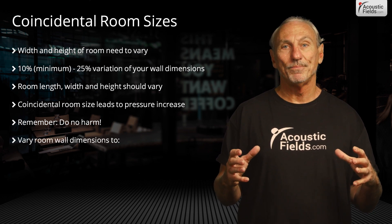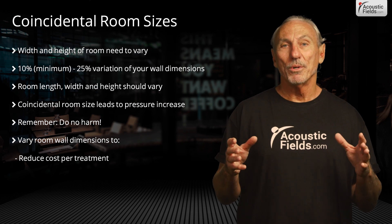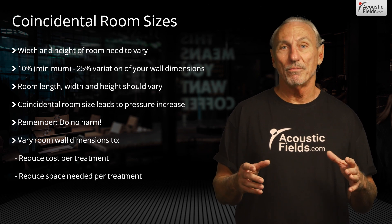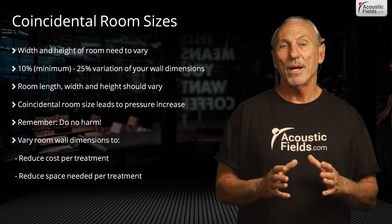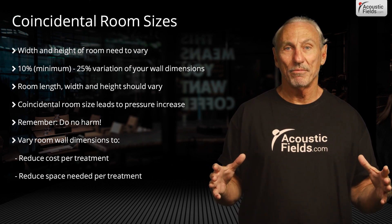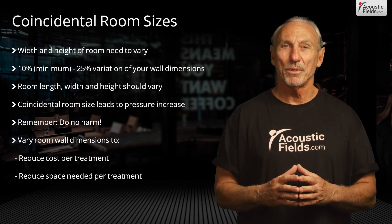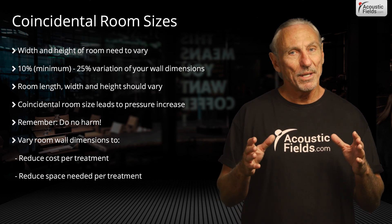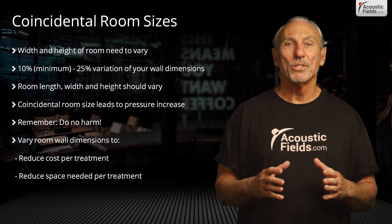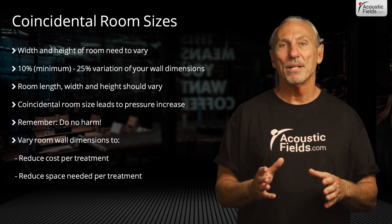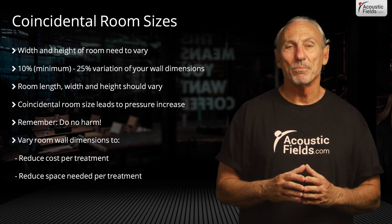We want to make sure we vary those dimensions. That reduces our cost for treatment and reduces the amount of space we need for treatment. Try to find rooms that have dimensions that vary — 25% is a good number to choose for. We can get away with less, but try to find dimensions that vary by 25%.